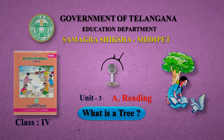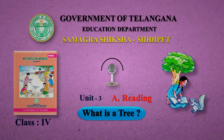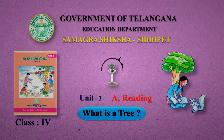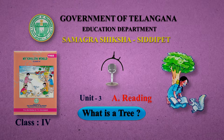Samagra Siksha Siddhipet Presence, My English World, Class 4, Unit 3, Page 33-35. Reading: What is a tree? Page 33. You know Amu, don't you? She is in class 4 now. One day she is writing in her notebook.